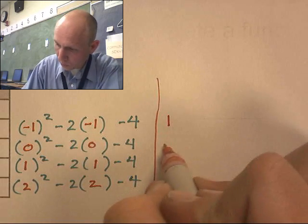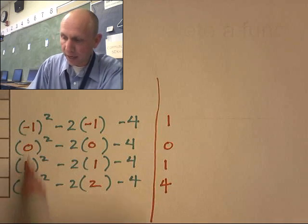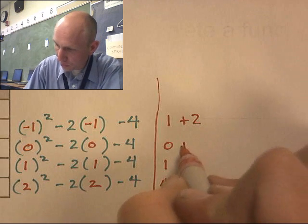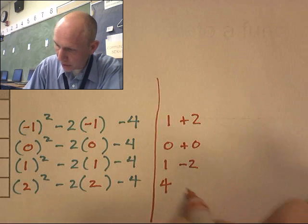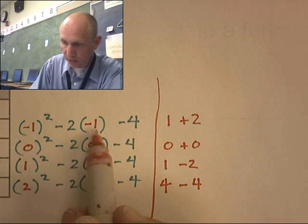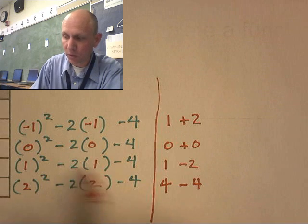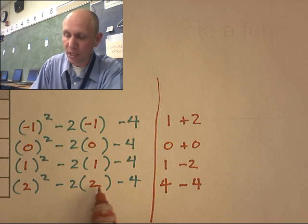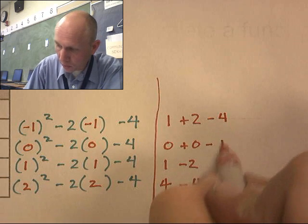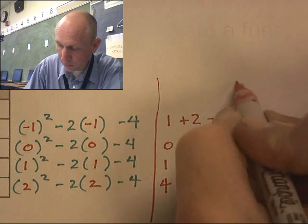Let's work through it step by step. First, I'll take care of all the squares: 1, 0, 1, 4. Next, the middle term — negative 2 times each x value: negative 2 times negative 1 is positive 2; negative 2 times 0 is 0; negative 2 times 1 is negative 2; negative 2 times 2 is negative 4. Then subtract 4 from each.